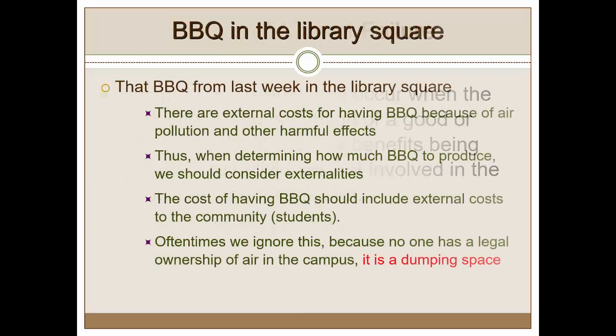If externalities exist, then the optimal production point we have looked at so far is not really optimal because we've been ignoring marginal social benefits and costs. I want to take a funny example here — the barbecue in the library square. We saw smoke coming out of the barbecue, people lined up buying it, and we can discuss a number of issues and benefits with it. Let's assume that barbecue fair is happening, and there are external costs of this.